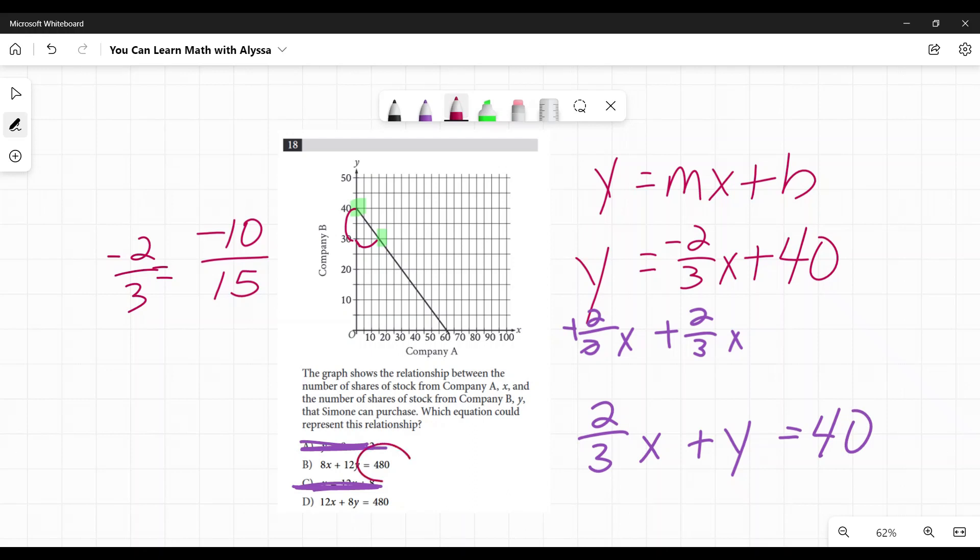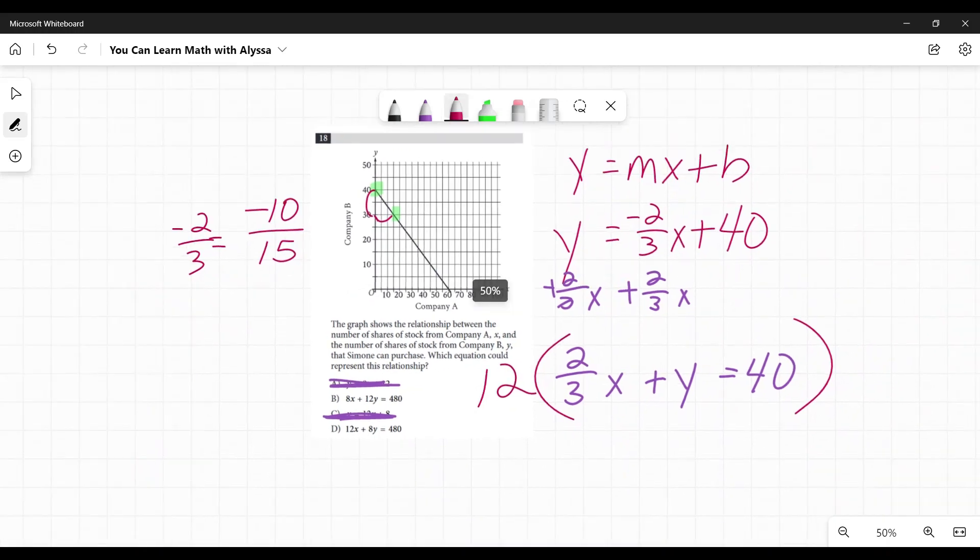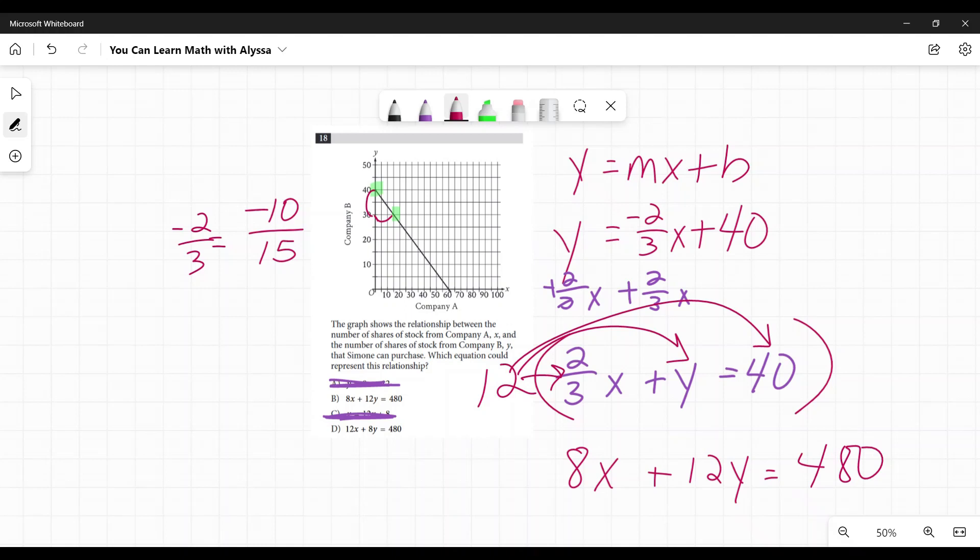Now, both of these have it as equals 480. How would I get from 40 to 480? 480 divided by 40 is 12, so I'm going to multiply this whole thing by 12. Okay, 12 times 2/3 is 8, and x comes along for the ride. 12 times y is 12y. 12 times 40 is 480. So 8x plus 12y equals 480. And that is B. Got my answer.